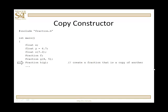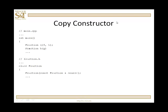What about this last line here? Fraction h, g. Well, g is a fraction. And so, what this says is I'm trying to create a fraction and pass another fraction to it. What I'm trying to do is create a fraction that is a copy of another fraction. This requires what is called a copy constructor. Special kind of constructor. Let's take a look at how we write one.